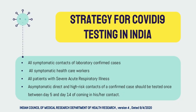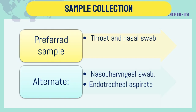Laboratory diagnosis: testing is recommended for all symptomatic contacts of laboratory-confirmed cases, all symptomatic healthcare workers, all patients with severe acute respiratory illness, and asymptomatic direct and high-risk contacts of a confirmed case — who should be tested once between day 5 and day 14 of coming into contact. This follows the Indian Council of Medical Research (ICMR) Department of Health Research strategy for COVID-19 testing in India, version 4, dated September 4, 2020.